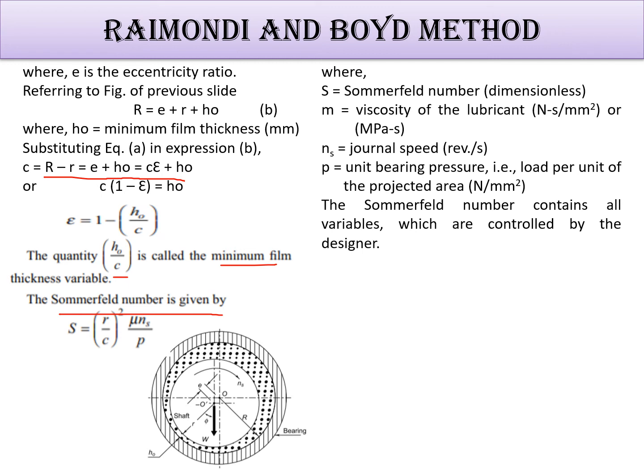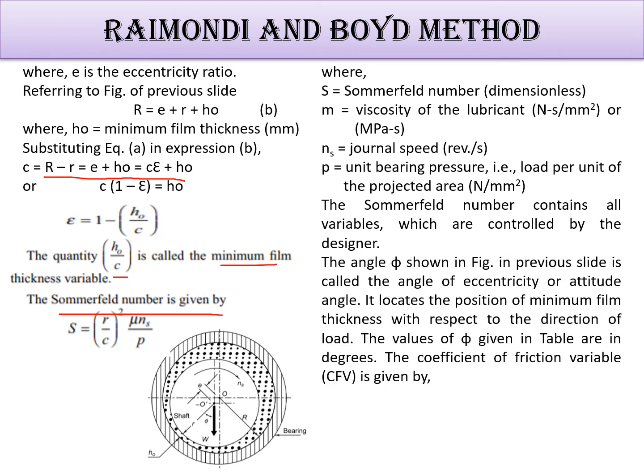The angle φ shown in figure, this angle φ in previous slide, is called the angle of eccentricity or attitude angle. It locates the position of minimum film thickness with respect to the direction of load. So the values of φ given in tables are in degrees. The coefficient of friction variable CFV is (r/c) into f.